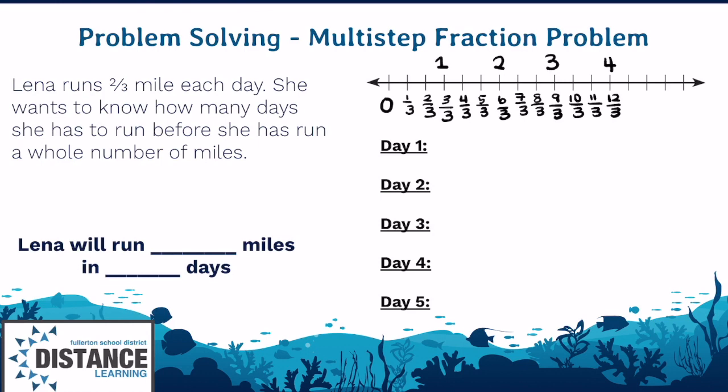So we know on day one, Lena runs two-thirds of a mile. So that means we take two steps because it's two parts out of the whole. So day one, she'll cover two-thirds of a mile. One, two. So for day one, she's at two-thirds. Then we have to keep going because two-thirds is not a whole number.